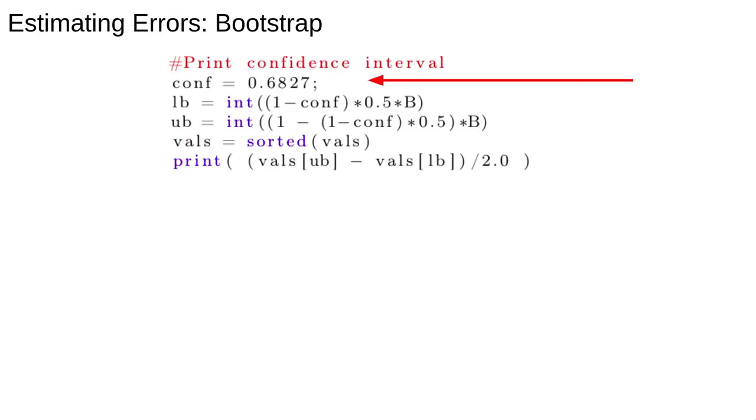This code snippet shows a simple way to use bootstrap samples to obtain error estimates for the parameters. We first choose a confidence interval, which encompasses 68.27% of the variation of the data. If the results have a normal distribution, this would be a 1 sigma error band. This means we have to measure the distance from roughly the 16th percentile to the 84th percentile, which is what LB and UB are. The final line prints the size of the error bar, which is half the width of the distribution, or roughly 1 sigma.